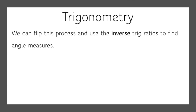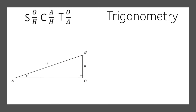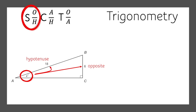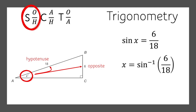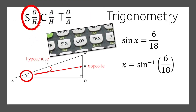We can flip this process and use the inverse trig ratios to find angle measures. In this case, we're missing the angle measure x, but we know the length of the opposite side and the length of the hypotenuse — so that's sine. The sine of x is 6 over 18. This is where the inverse comes in. If we take the sine inverse of 6 over 18, look on your calculator above the sine, cosine, and tangent buttons for those inverse buttons. Sine inverse of 6 over 18 gives us the angle measure of 19.47 degrees.